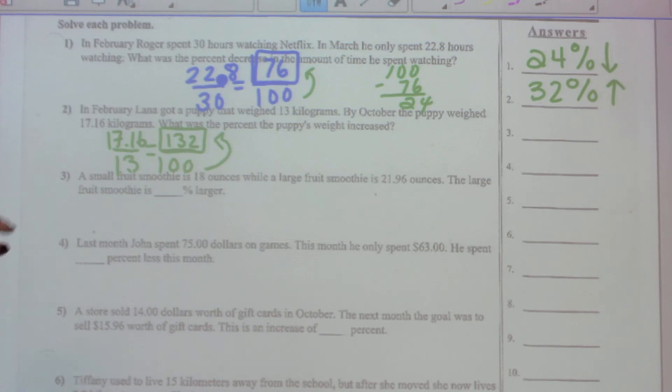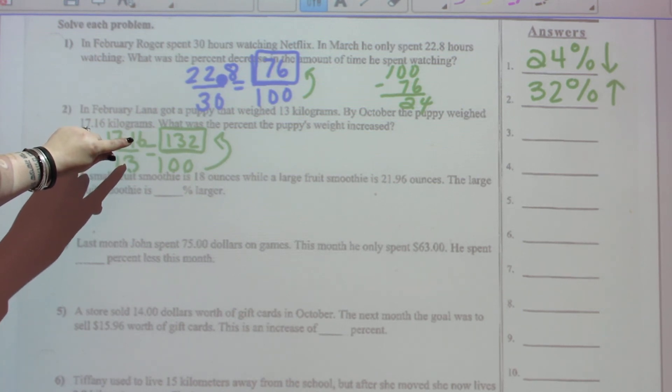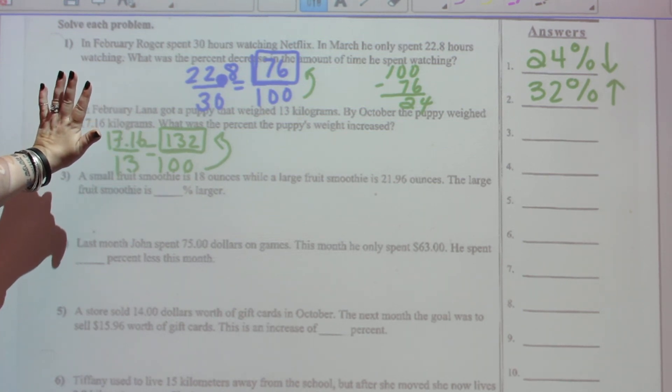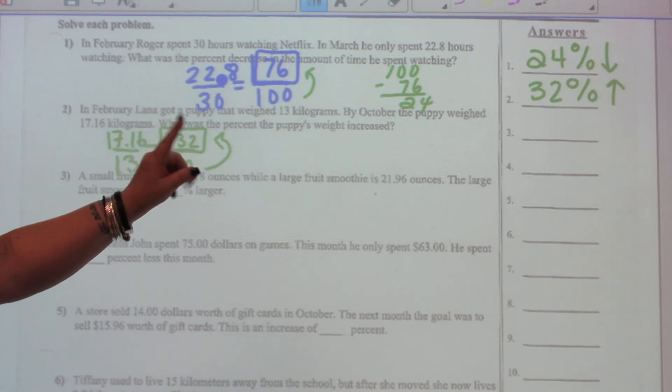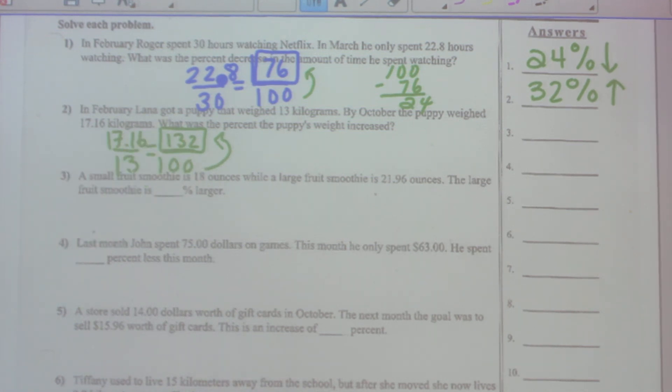Another example is if your allowance was 13 dollars and your parents said I'm going to increase your allowance to 17.16 or 17 dollars and 16 cents, that means that they increased your allowance by 32 percent.